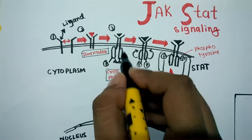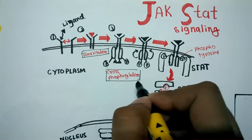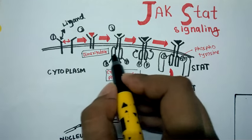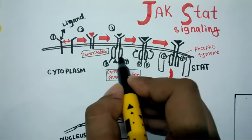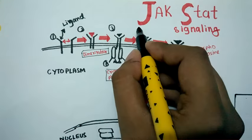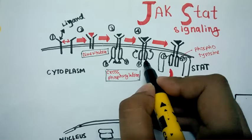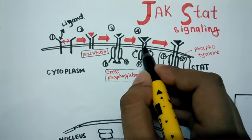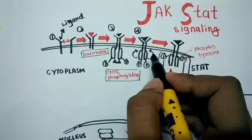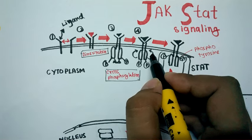In step three, JAK gets associated with the cytoplasmic domain of the receptor, and JAK actually cross-phosphorylates each other. One JAK phosphorylates this JAK, and this JAK phosphorylates the other JAK.